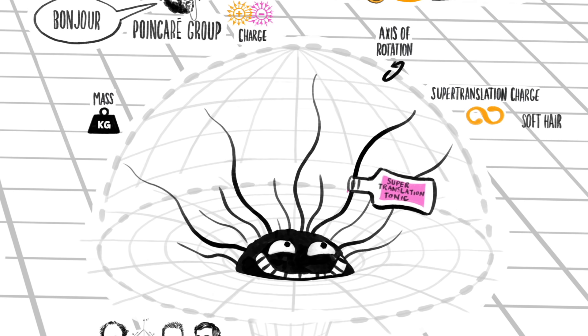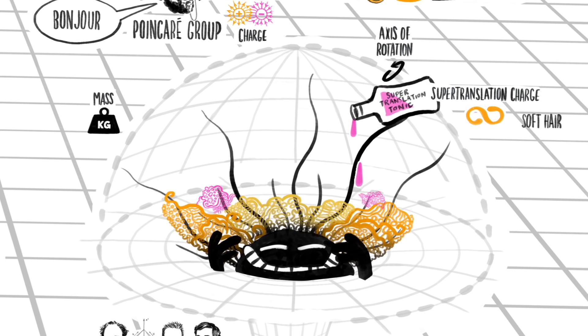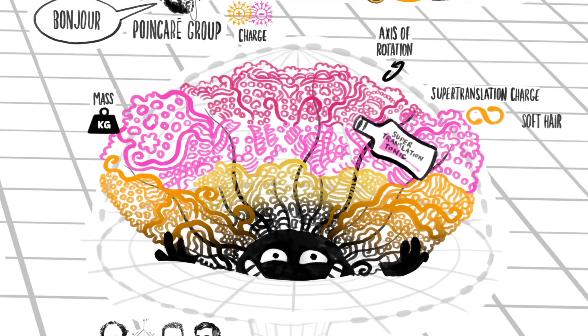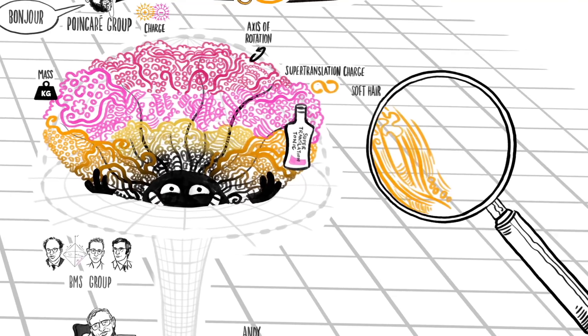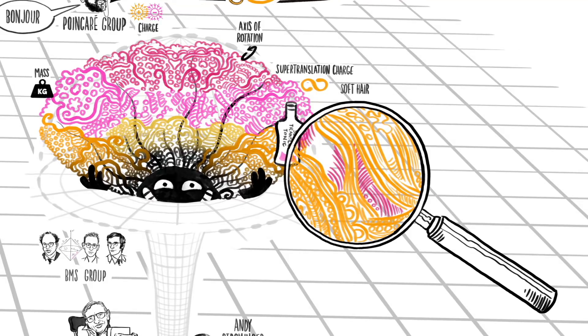They are not bald, or with only three hairs, but actually have a very large amount of supertranslation hair. This supertranslation hair might encode some of the information about what is inside the black hole.